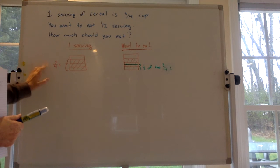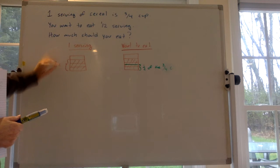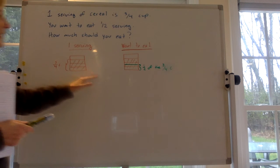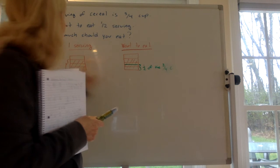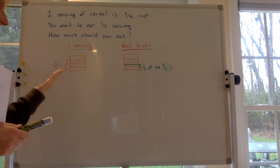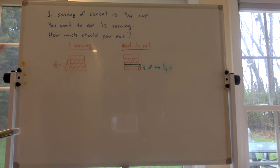One serving is three-quarters cups. So this represents a whole cup. We only want three out of those four. But then we only want to eat half of the shaded three blocks. So basically we want one and a half of those shaded blocks instead of three blocks. How do we relate that to a fraction of cereal?